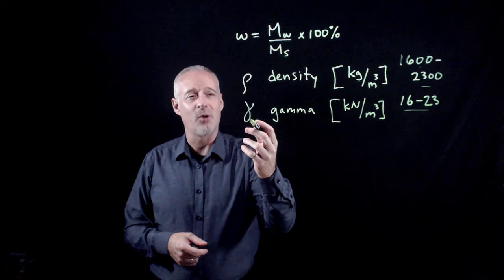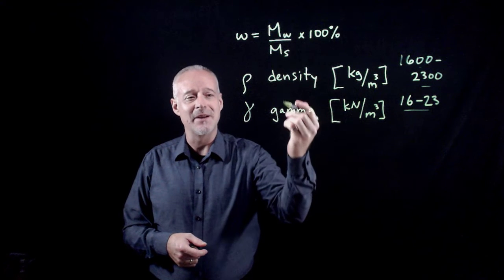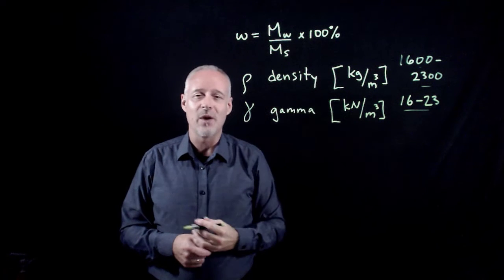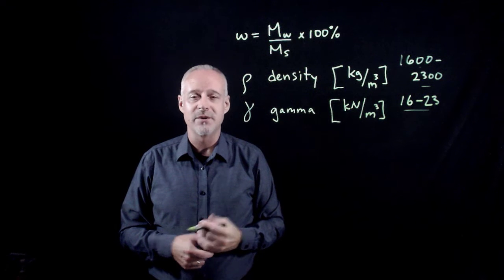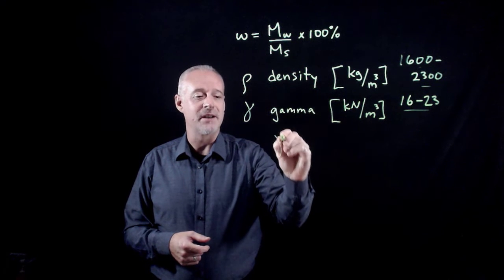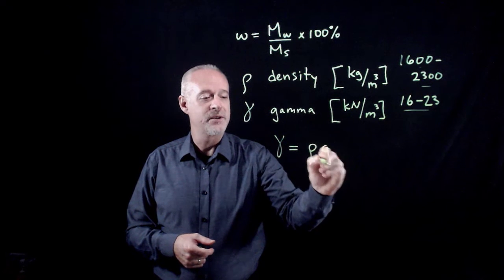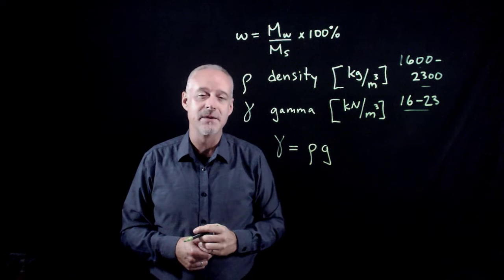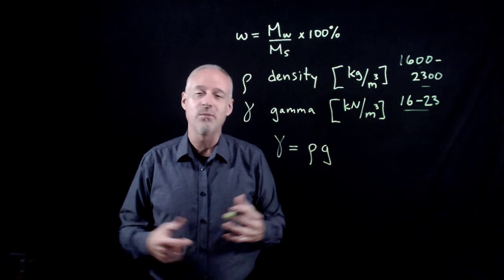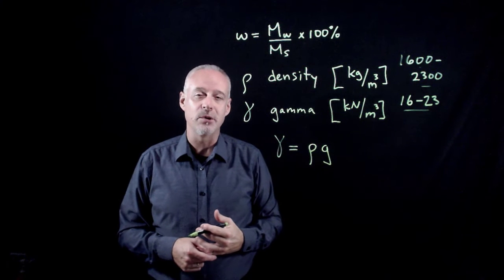It's also important to note that the density and the unit weight are related to each other simply by the acceleration of gravity. We can write gamma equals the density rho times gravity, where gravity is 9.8 or 9.81 meters per second squared.